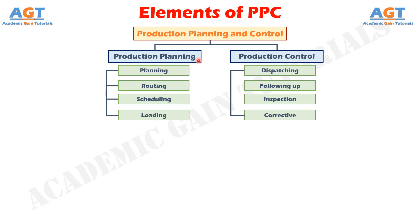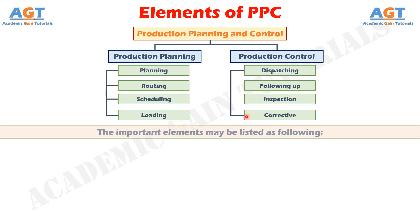top level, whereas production control is exercised at the machine shop floor at the bottom level, where actual production is taking place. Some important elements of production planning and control have been depicted in this figure. The important elements may be listed as following. Number 1: Materials.